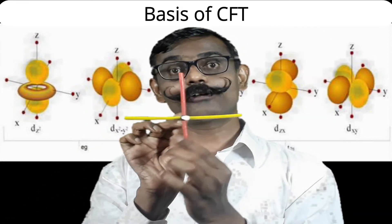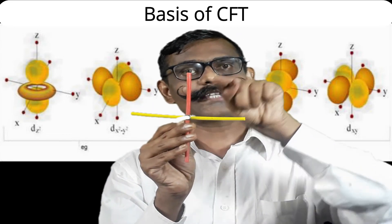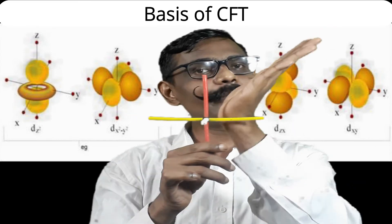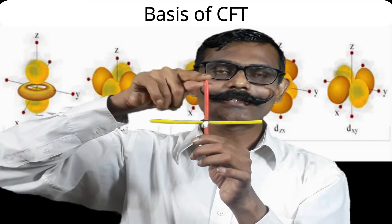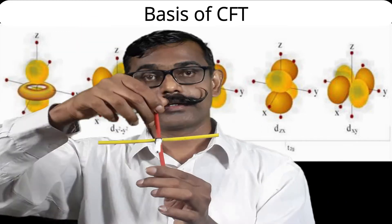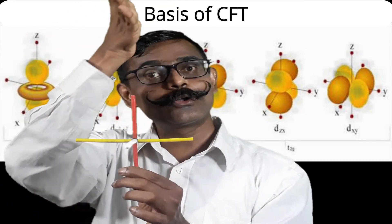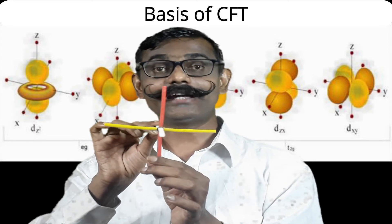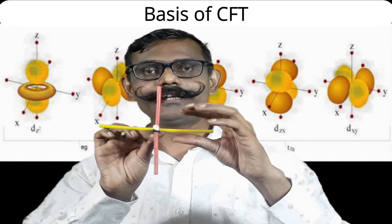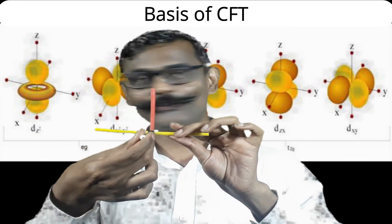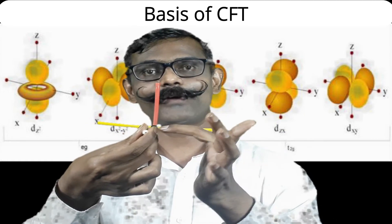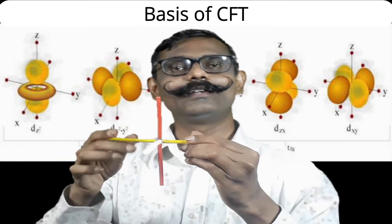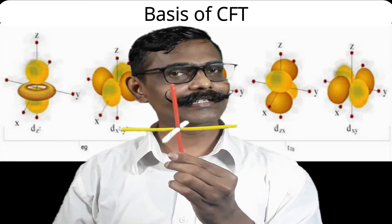The fourth orbital is dxz. It involves the x-axis and z-axis. In between x and z there will be one lobe, then the opposite lobe, third lobe, and last lobe — all in between x and z, making 45-degree angles to both axes. So dxz is in the x-z plane, which is perpendicular to the y-z plane. The last orbital is dxy. The lobes are in between x and y, making a 45-degree angle to either axis — all four lobes in the x-y plane.